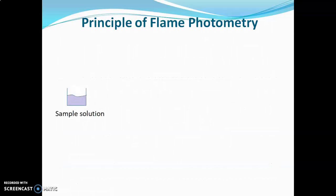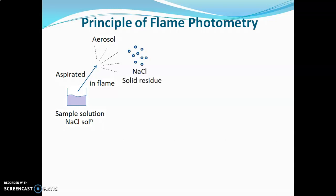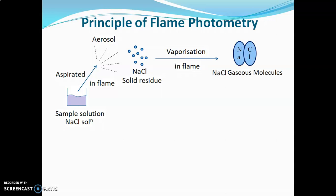Now we will see the same thing diagrammatically with an example using sodium chloride. A NaCl solution is aspirated into the flame, producing droplets. Due to the flame temperature, the solvent evaporates and a solid residue of NaCl remains in the flame. This solid NaCl then vaporizes, producing gaseous NaCl molecules, which then undergo thermal dissociation due to the flame temperature.